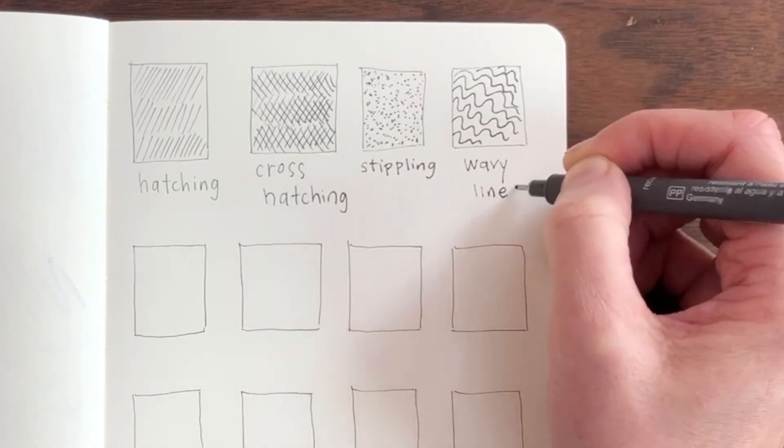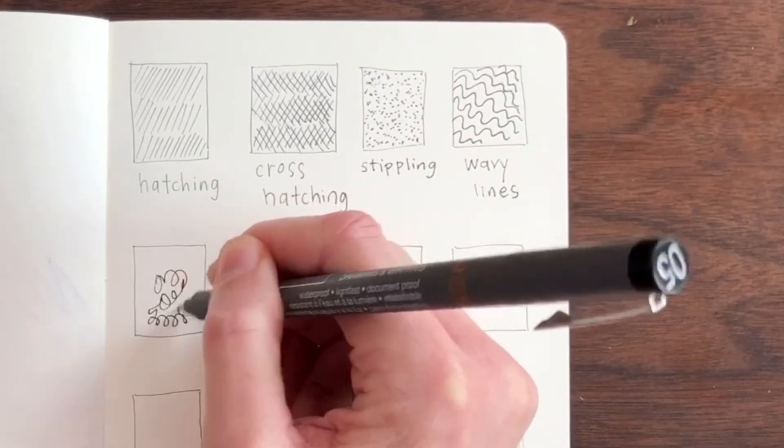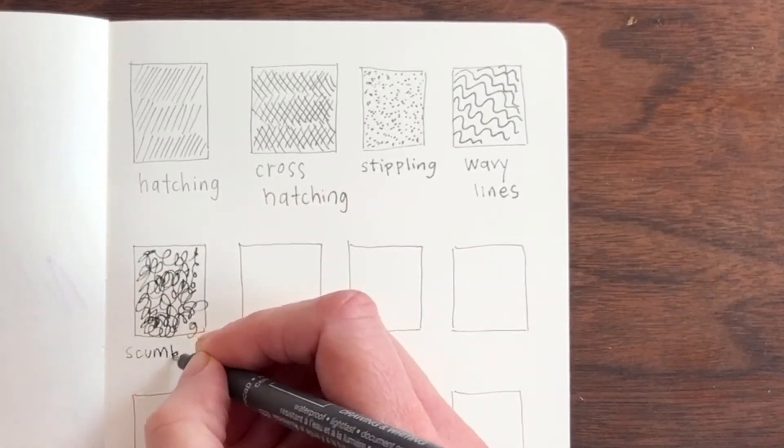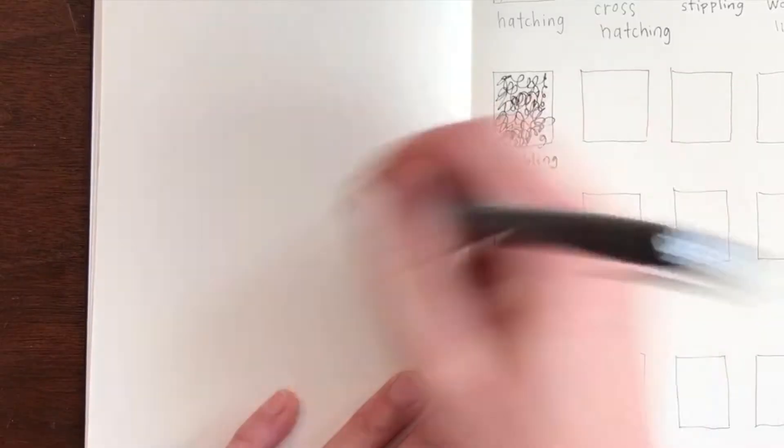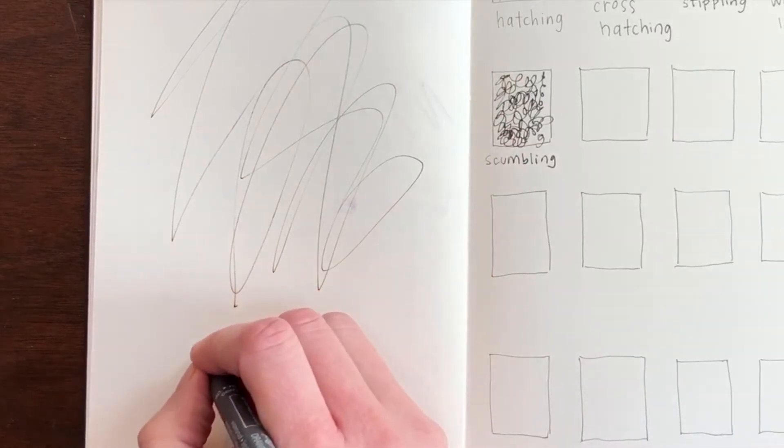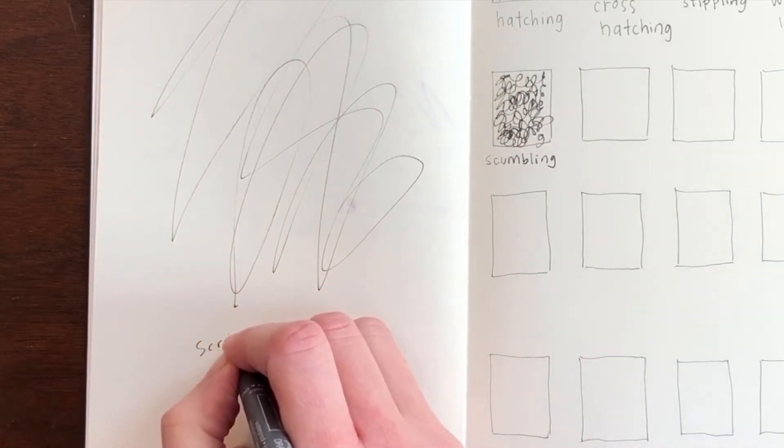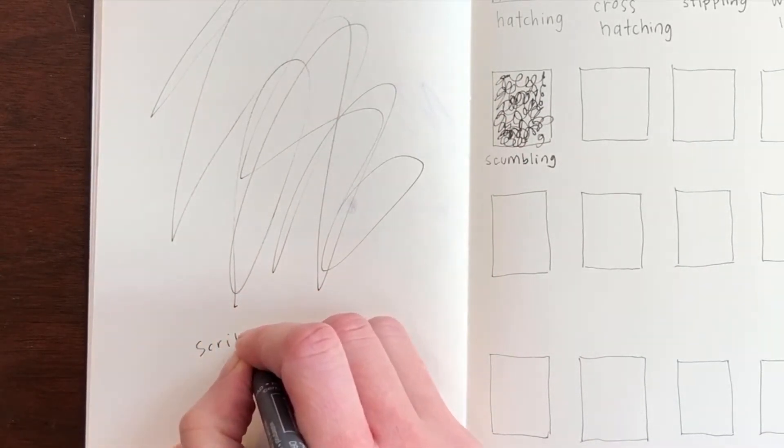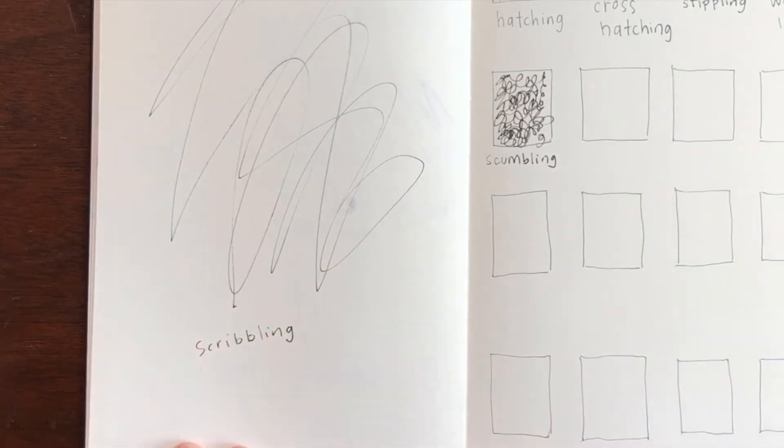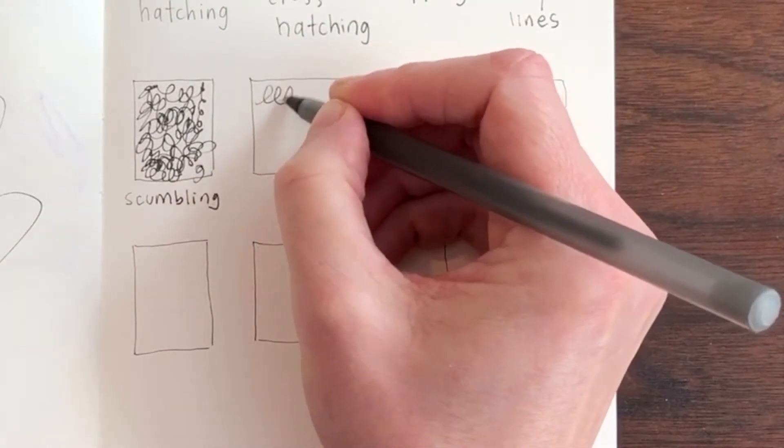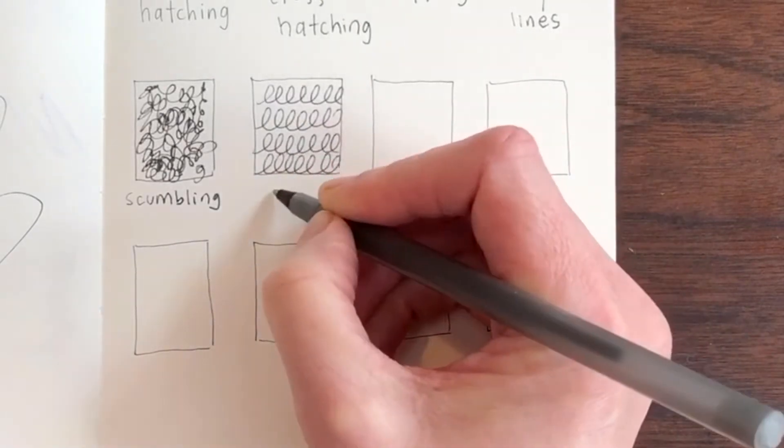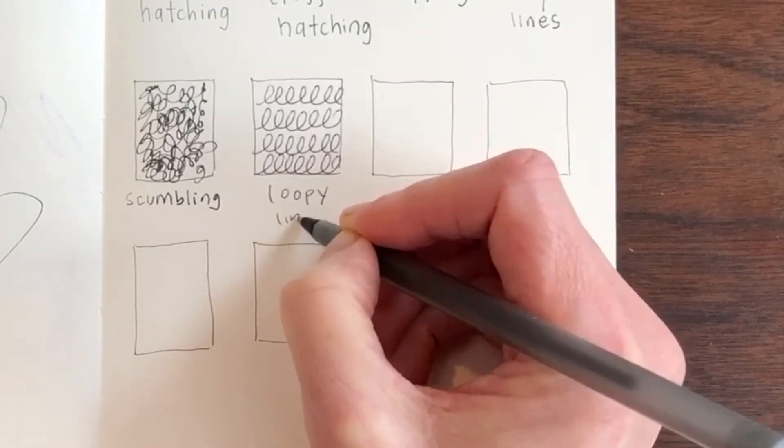These are wavy lines. This is a controlled scribble. This type of mark is called scumbling. When most people first start to draw they draw a little bit like this and we call this scribbling. Scribbling is uncontrolled and couldn't fit into a little box. If your drawings look like scribbling that's okay. They can still be really interesting and it's good practice. When you get more control over your hand you can make this line that kind of looks like a cursive E. I call these loopy lines.